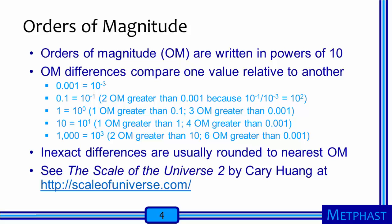Looking at some specific examples: the number 0.001 can be written as ten to the minus third power. Similarly, 0.1 can be written as ten to the minus first power, and 0.1 is two orders of magnitude greater than 0.001, because ten to the minus first power divided by ten to the minus third power is ten to the second power. One is equal to ten to the zero power, so it is one order of magnitude greater than 0.1, and three orders of magnitude greater than 0.001. Ten is equal to ten to the first power, so it's one order of magnitude greater than one and four orders of magnitude greater than 0.001.